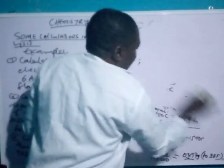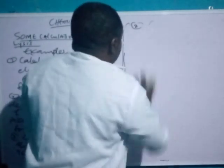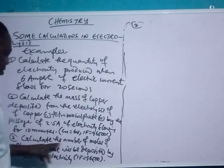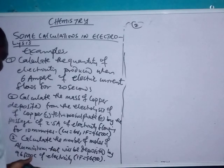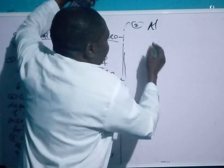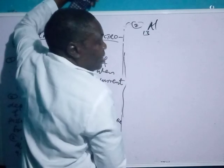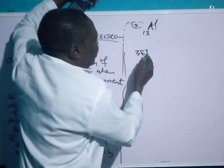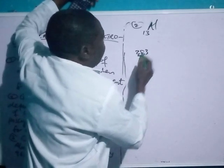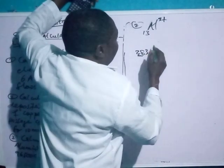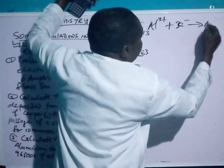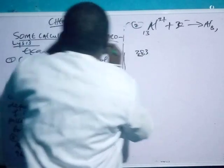These are simple methods of carrying out calculations in electrolysis. The last question is: calculate the number of moles of aluminium that will be deposited by 96,500 Coulombs of electricity. Aluminium (Al) has atomic number 13, with electronic configuration 2, 8, 3. Aluminium is capable of releasing 3 electrons so that it can achieve a complete outer configuration, becoming Al³⁺.